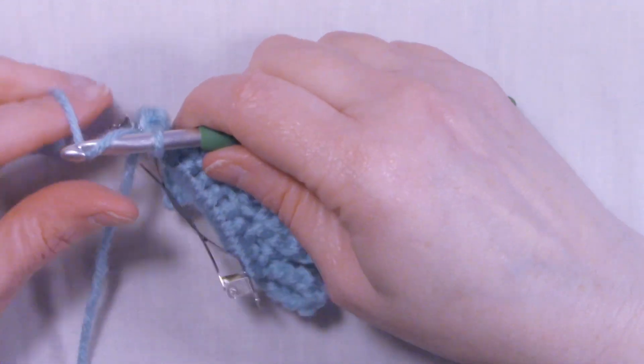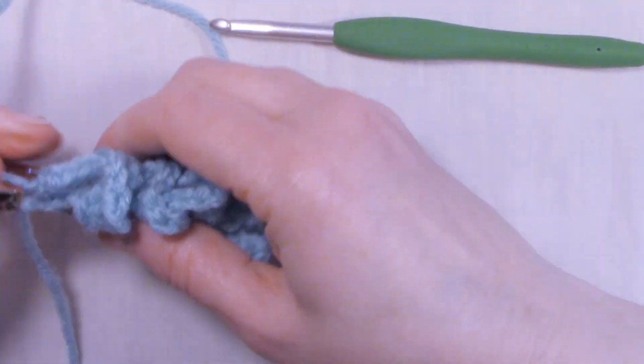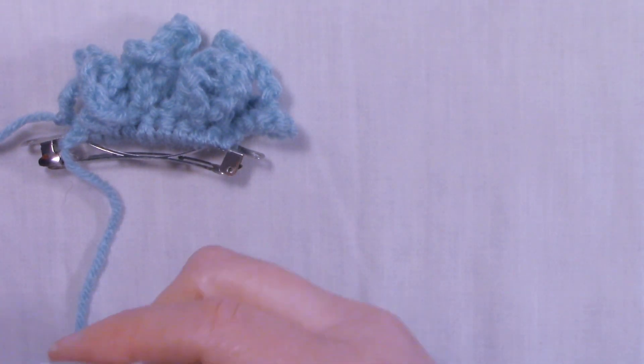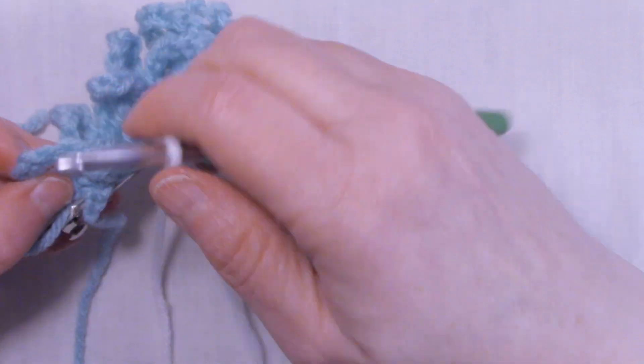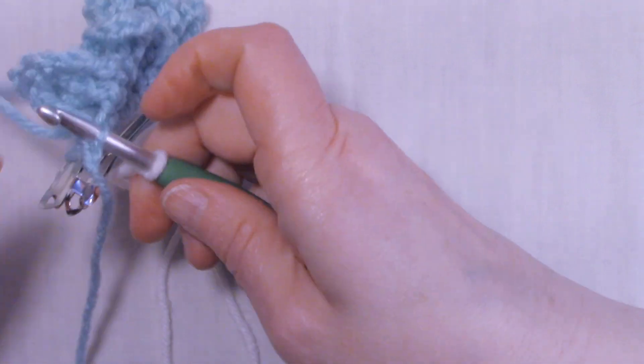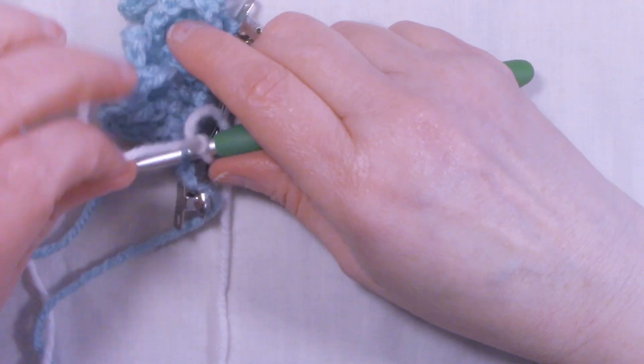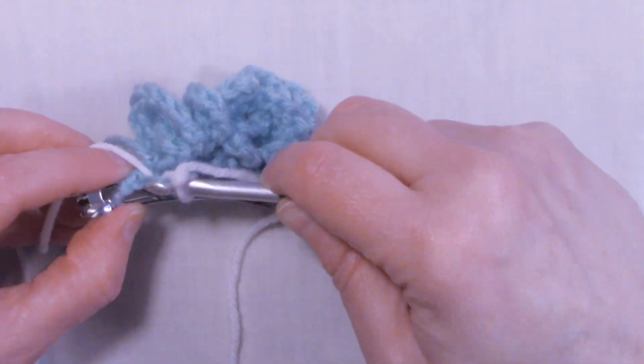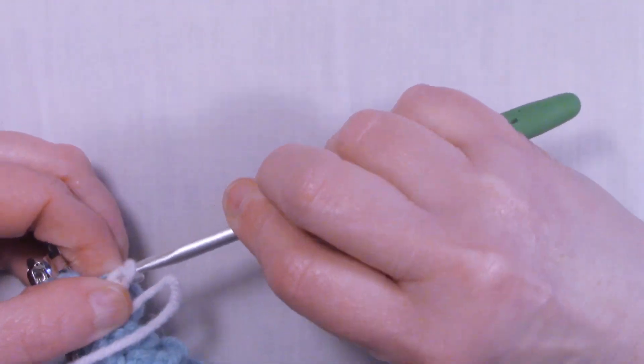I've reached the end of the row and I'm going to fasten off and get my second color, which I'm going to use white. I'm going to attach my white yarn in the free loop of the stitch that I just fastened off in. Let me get my yarn situated here so you can see what I'm doing. And we're going to fasten on with a slip stitch.